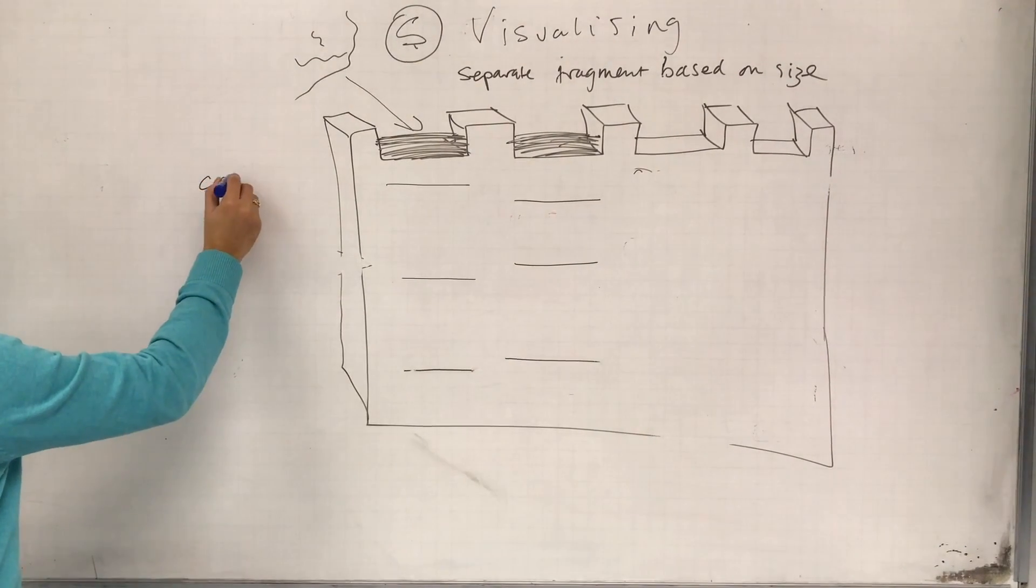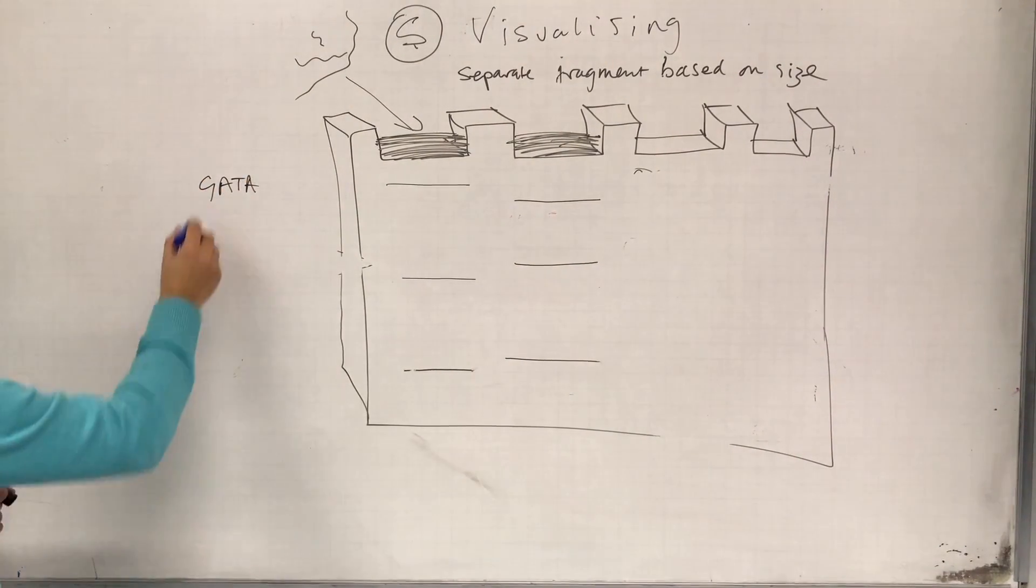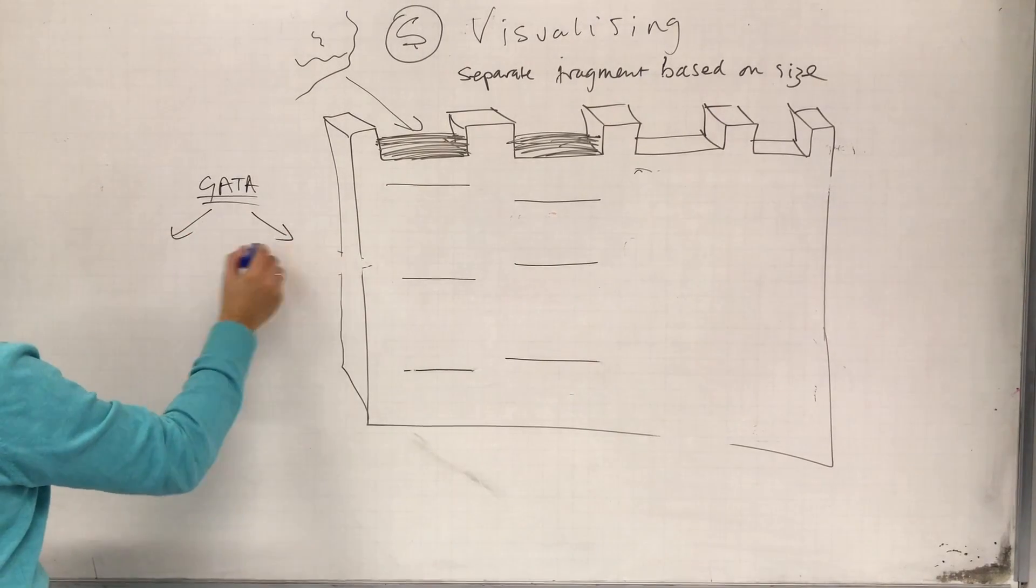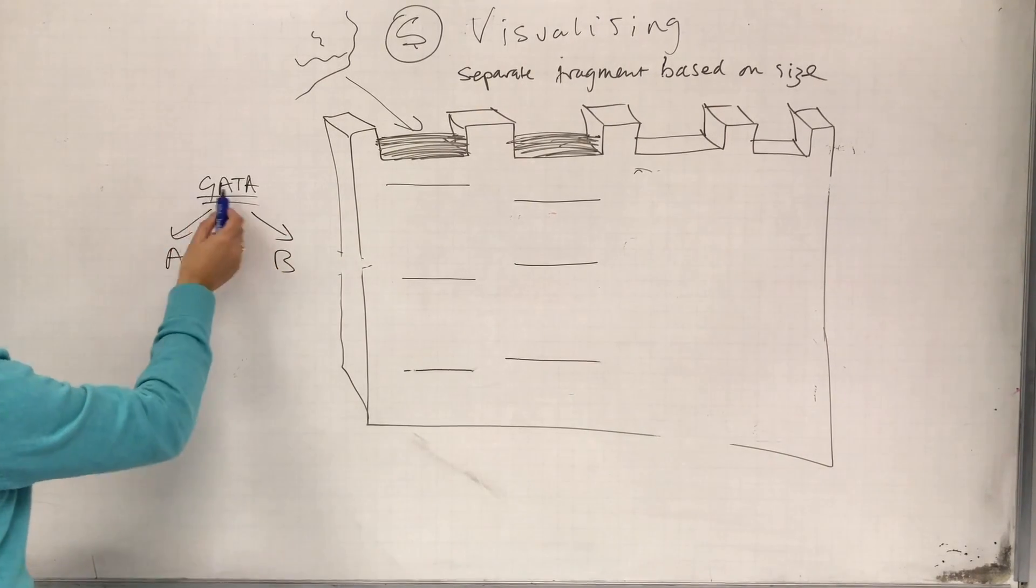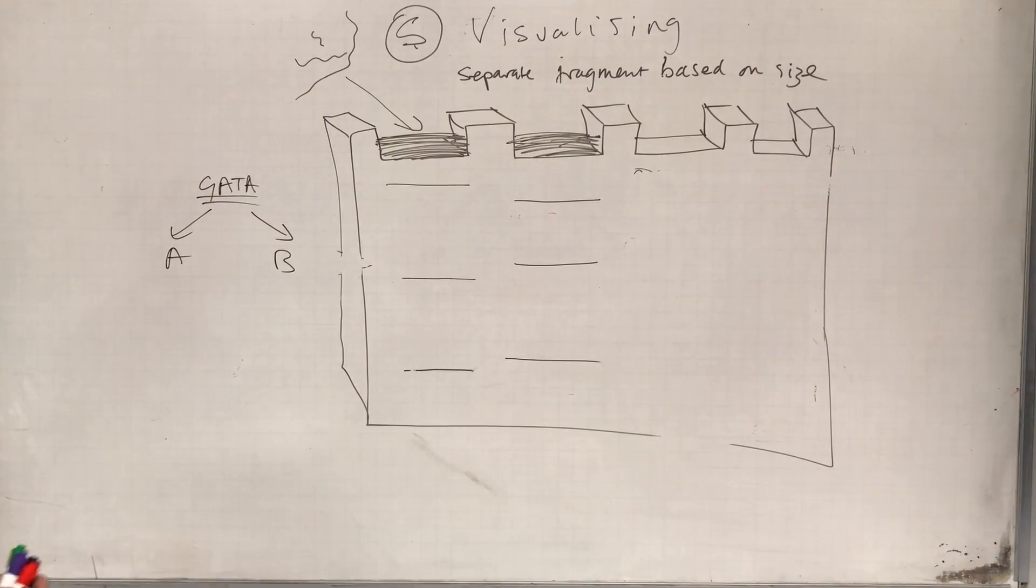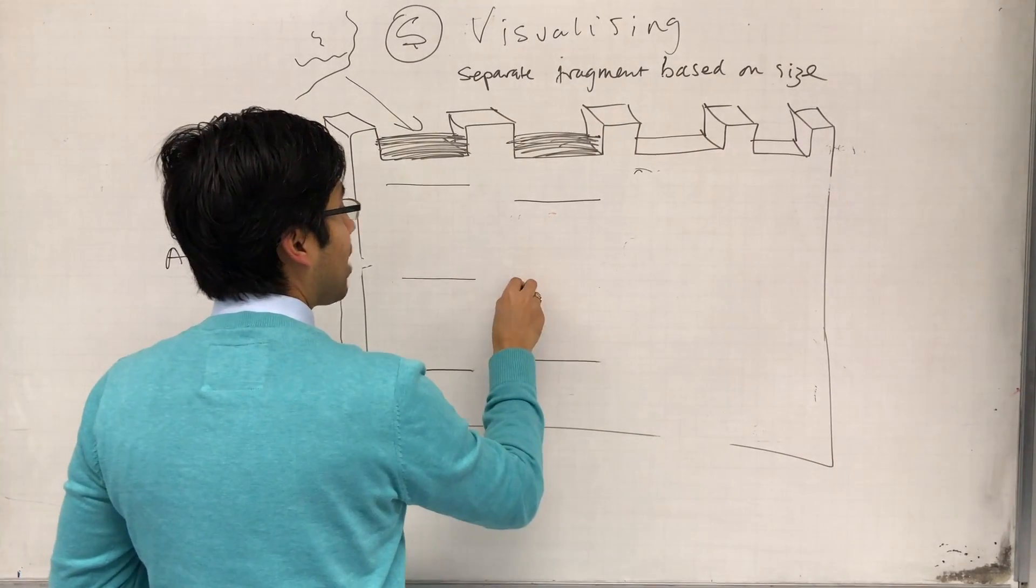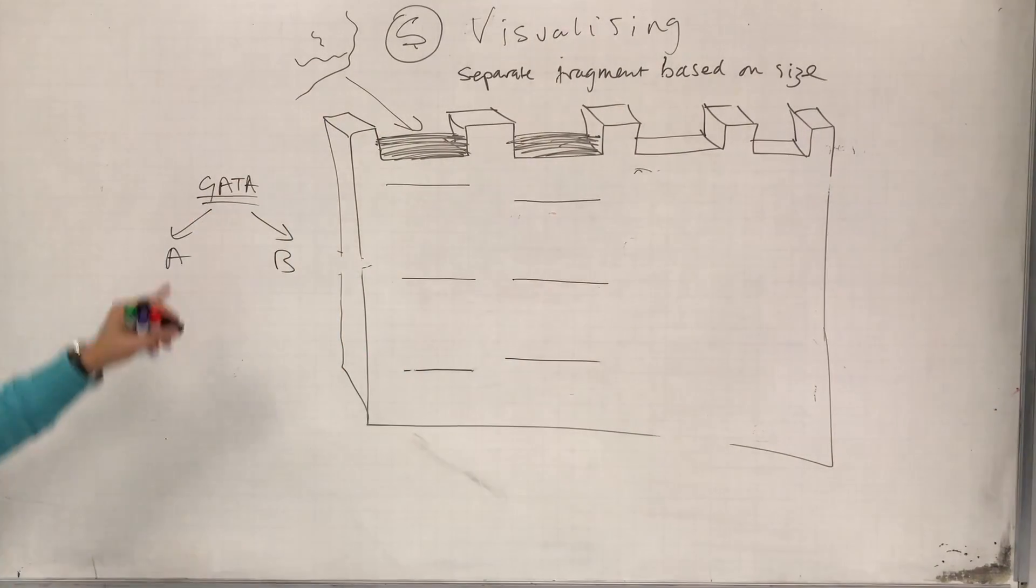Because if I want to compare the sequence GATA, I want to know, does person A and person B, do they have the same number of GATA repeats? Or do they have a different number of GATA repeats?